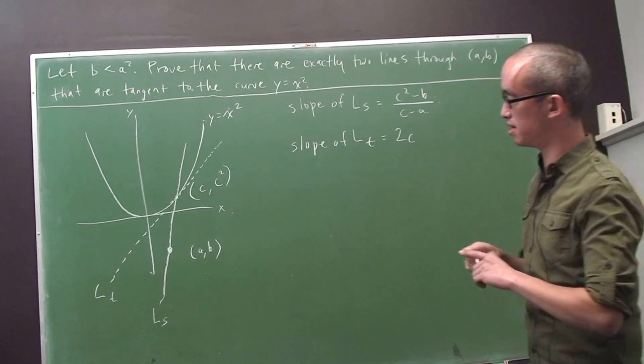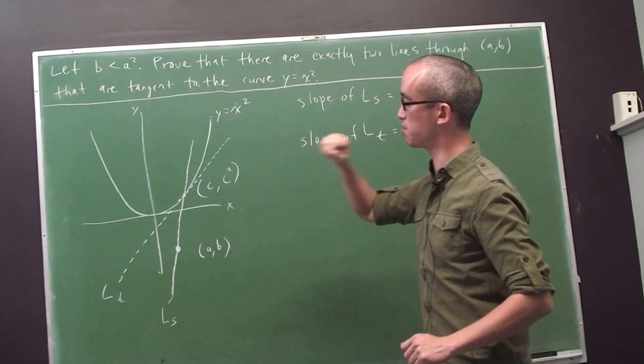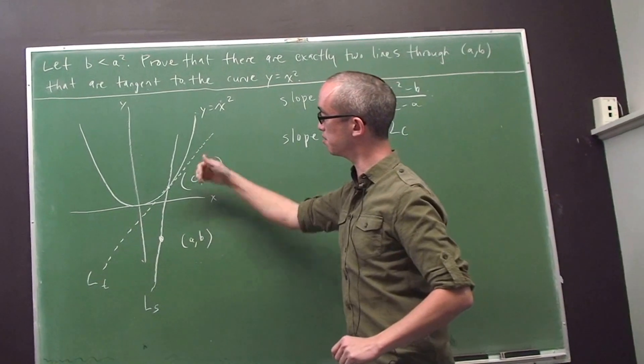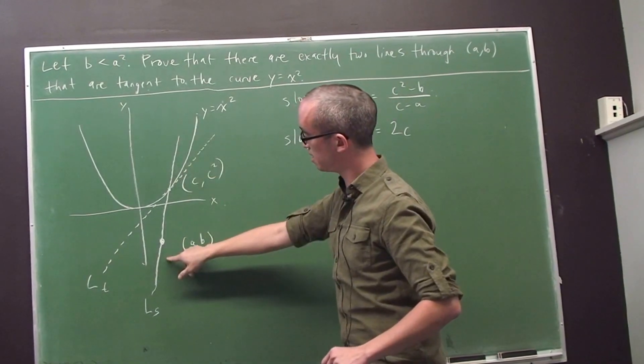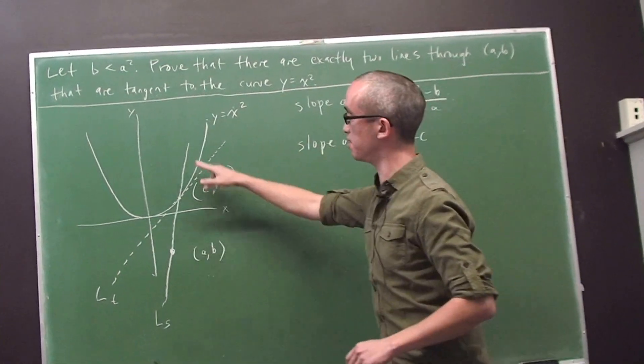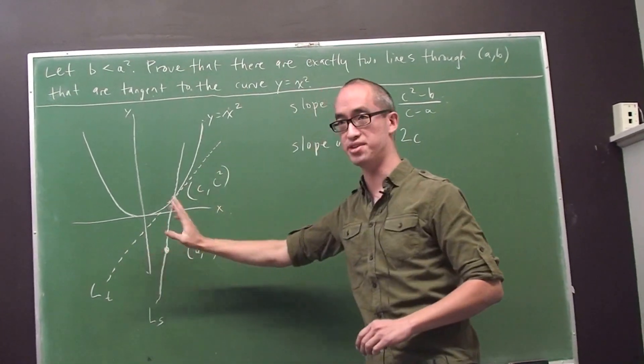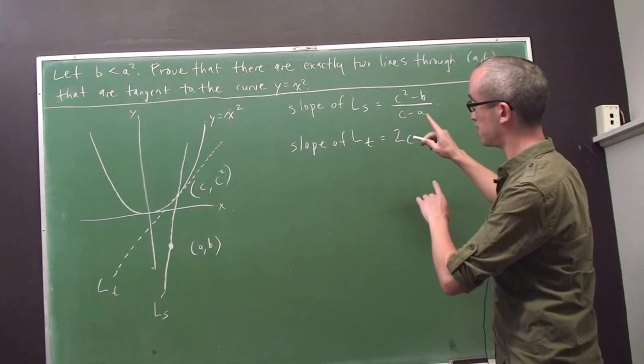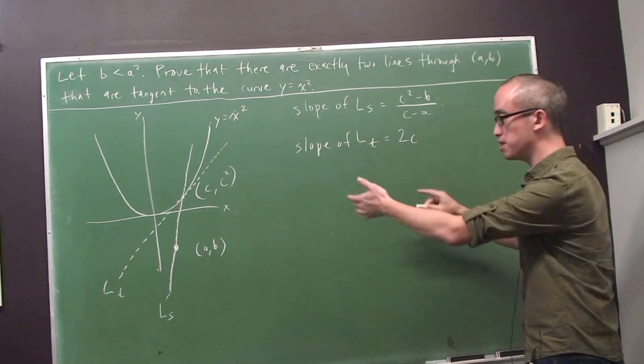And what I'm interested in are those points (c, c²) where those two lines coincide, where the secant line is in fact equal to the tangent line. Or more precisely, where the slope of the secant line is equal to the slope of the tangent line. So I'm interested in those values c, and those points (c, c²), such that these two slopes are equal.